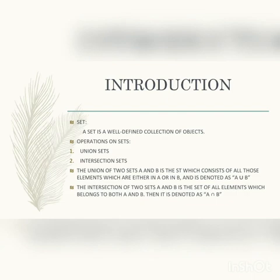The union of two sets A and B is the set which consists of all those elements which are either in A or in B, and is denoted as A union B. The intersection of two sets A and B is the set of all elements which belongs to both A and B, then it is denoted as A intersection B.